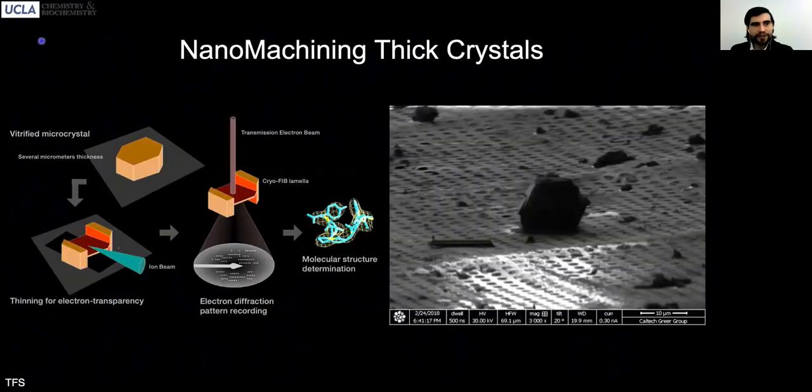One of those innovations involves the nanomachining of thick crystals using focused ion beams. Crystals that are too thick for the electron beam to penetrate, diffract from, and allow for structural interrogation are broken down. Pieces of the crystal are ablated by the focused ion beam, allowing for thin lamella to remain akin to the process used by electron tomography to image inside of complex specimens like cells.